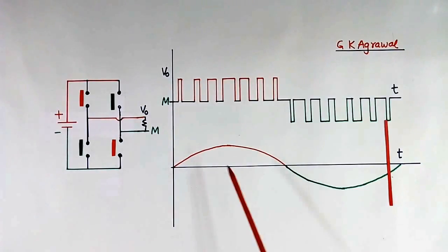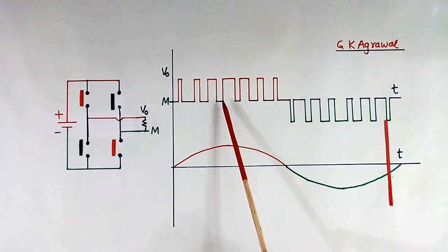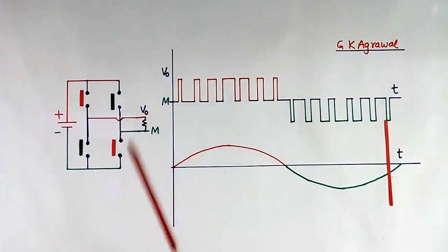Now here, to control the output voltage, we are controlling the width of pulse. These are pulses but having different width. So it is some kind of modulation of width, so we call it pulse width modulation. Because by controlling the width of pulses, we are controlling the output. Where voltage is more, width is more. When voltage is less, width is less.